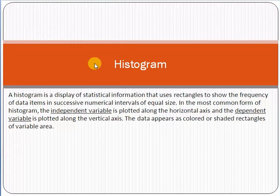In the most common form of histogram, the independent variable is plotted along the horizontal axis and the dependent variable is plotted against the vertical axis. Histogram is simply a graph — you can draw it in Excel using bar charts. It represents data where independent variables are on the horizontal axis and dependent variables are on the vertical axis.